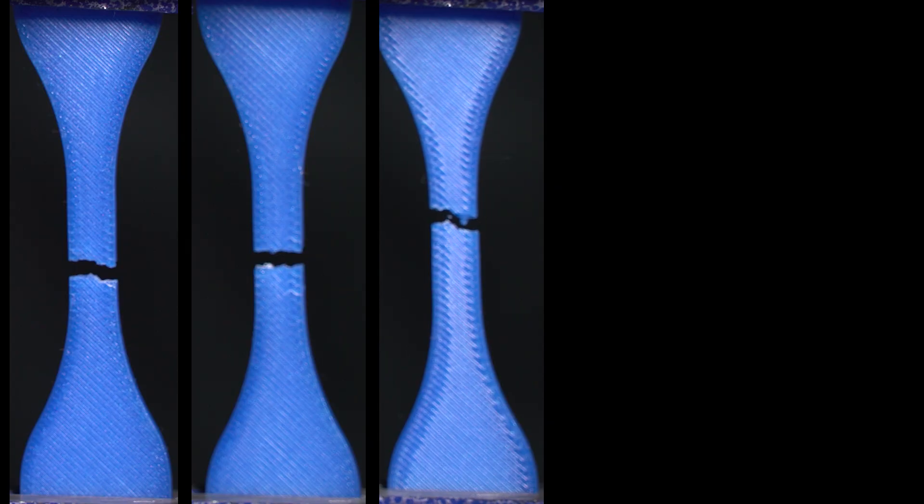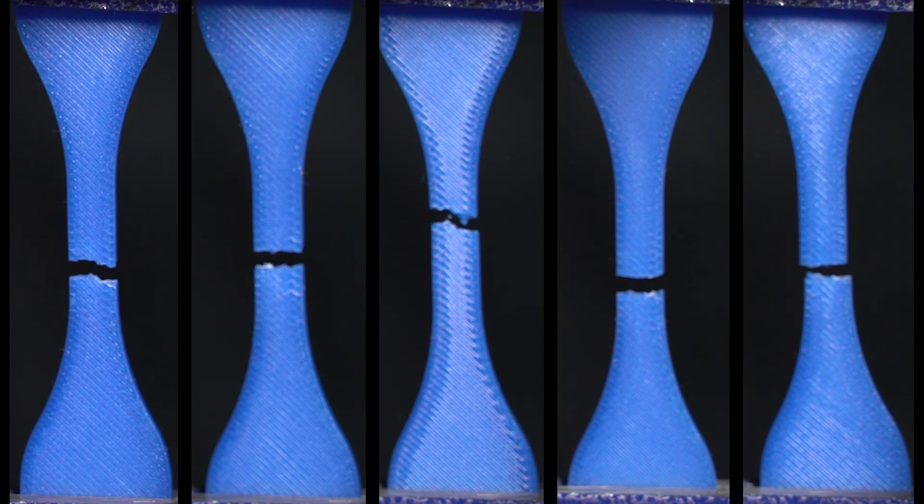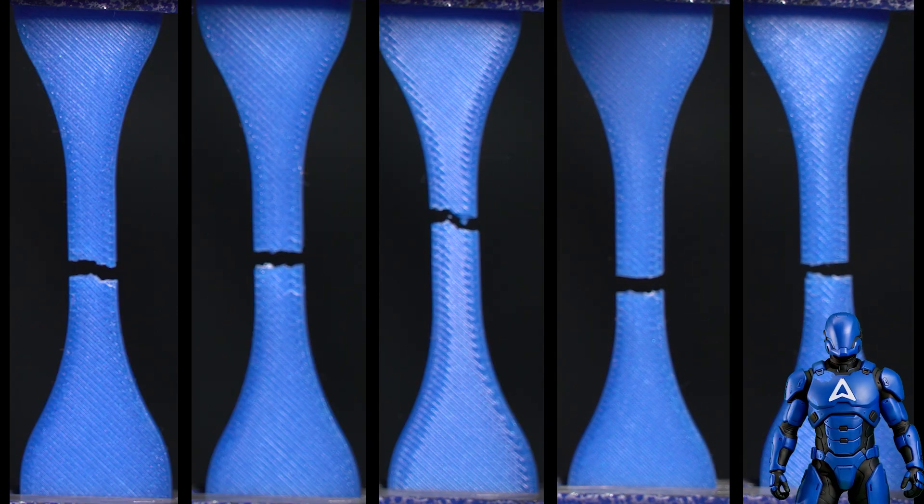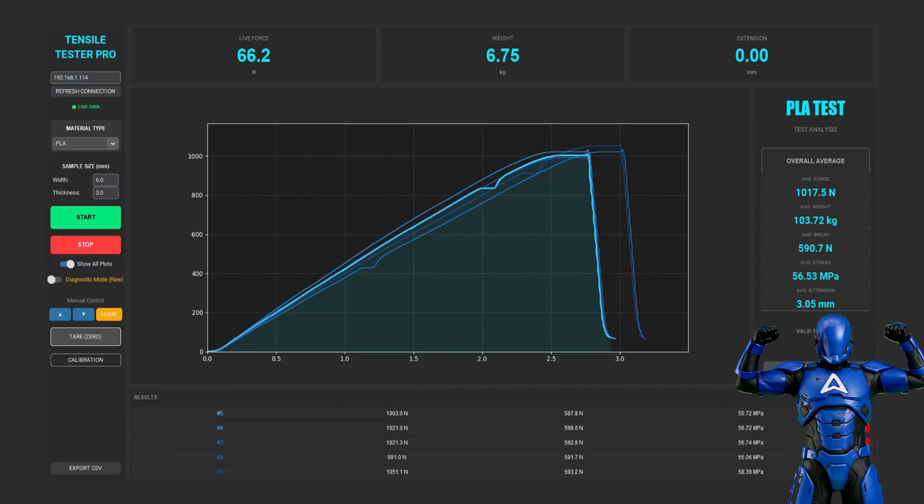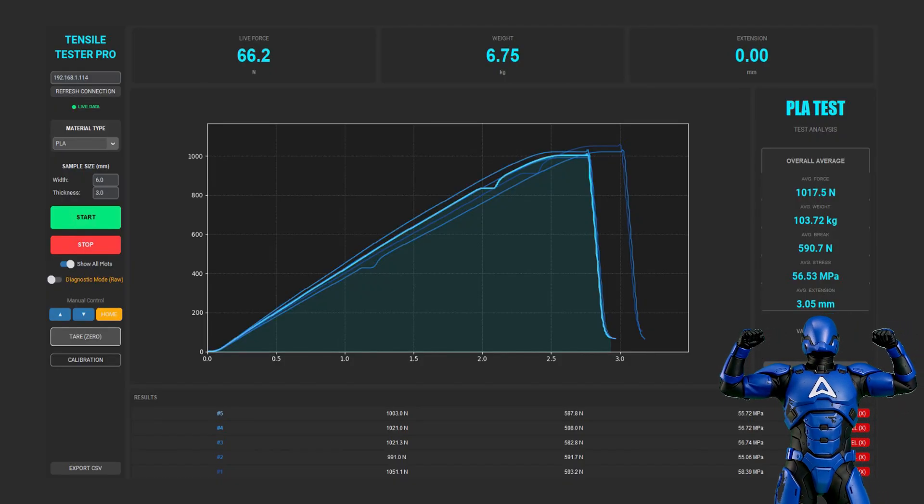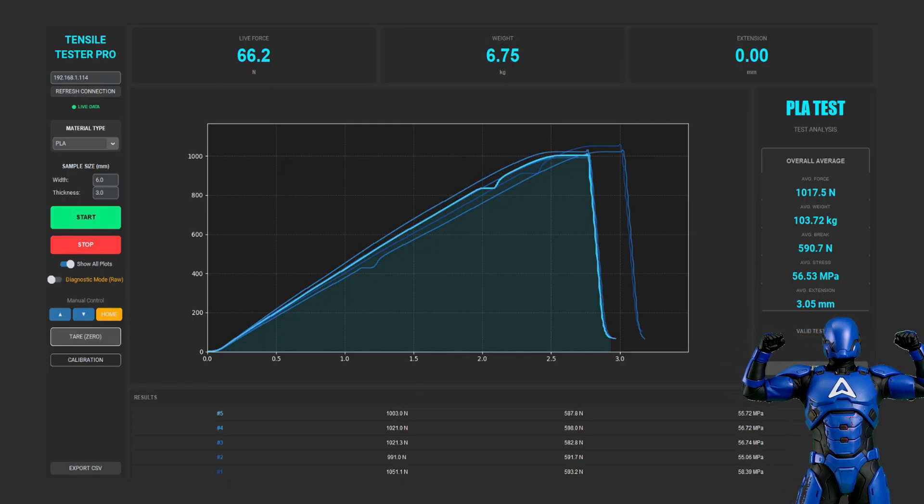Finally, blue PLA. In pure pull, it looks like the strongest. PLA reaches the highest peak stress at about 58 megapascals, 470 newtons sustained, but only around 3 millimeters of stretch before it snaps.